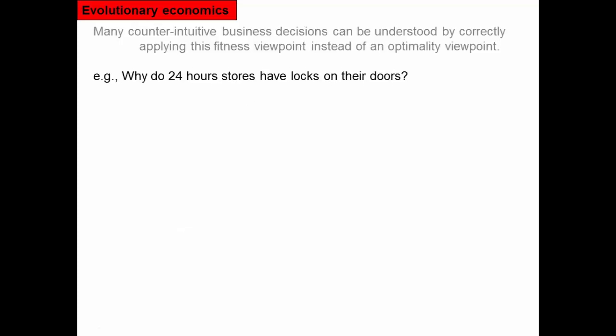For example, if you go to a 24-hour store, they often have locks on their doors — but why? That doesn't even make sense, because a lock costs money to manufacture. So why are there locks on the doors of 24-hour stores? Let's think about this from an economic point of view.